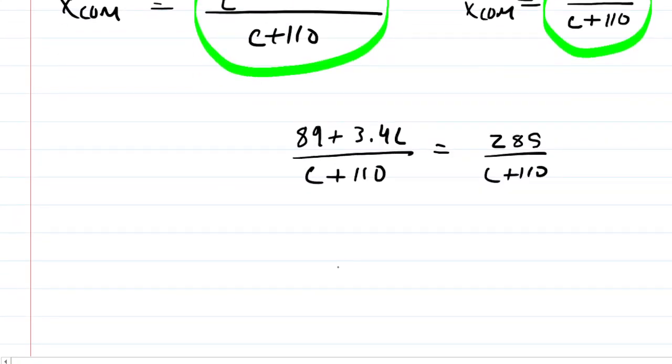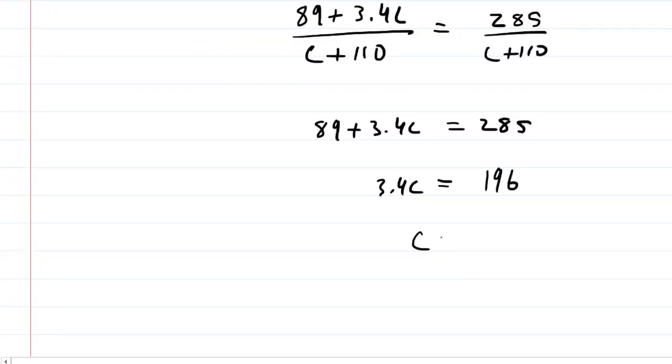Now you can see that they have the same denominator, so if you multiplied both sides by that denominator, it would cancel out. And now we have a nice and easy equation to solve here. We'll subtract both sides of this equation by 89, and we get 196, and then divide both sides by 3.4, and we will see that Carmelita's mass is approximately 57.6 kilograms. This is the correct answer to the question.